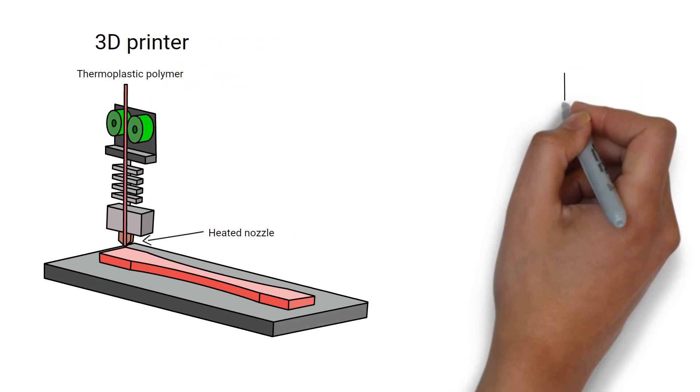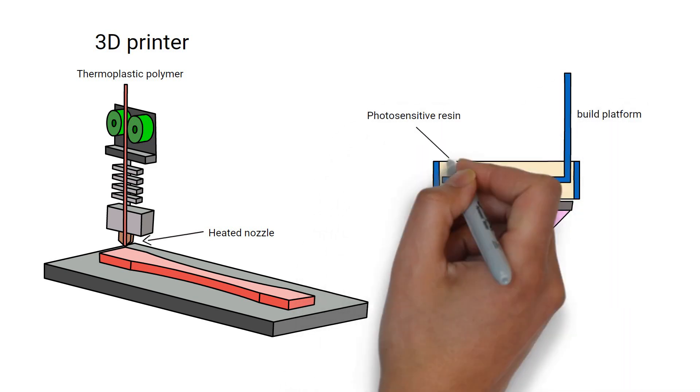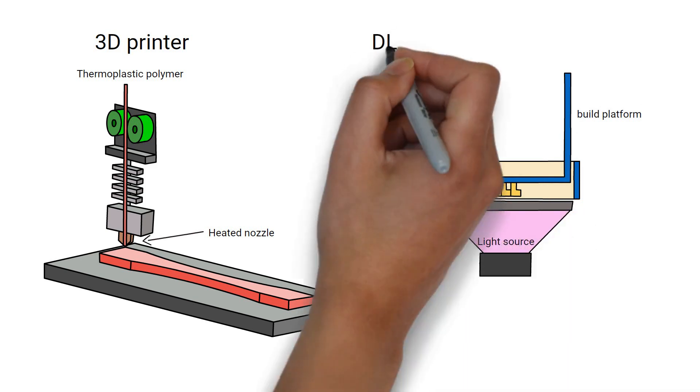However, in this video, we are interested in a different type of 3D printing, the type that uses UV curable polymers instead. One example being DLP or direct light processing.